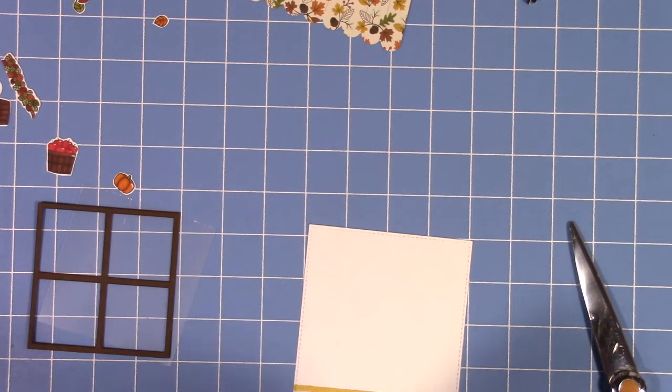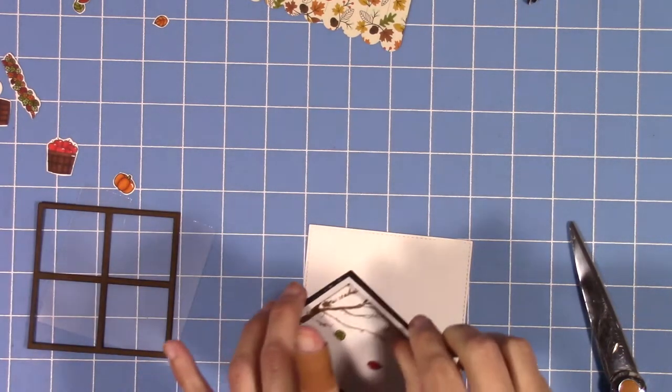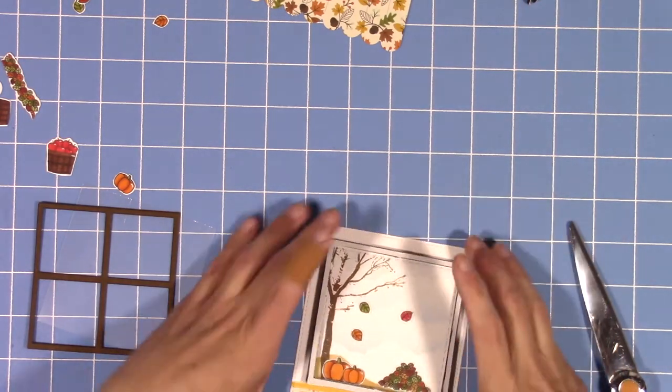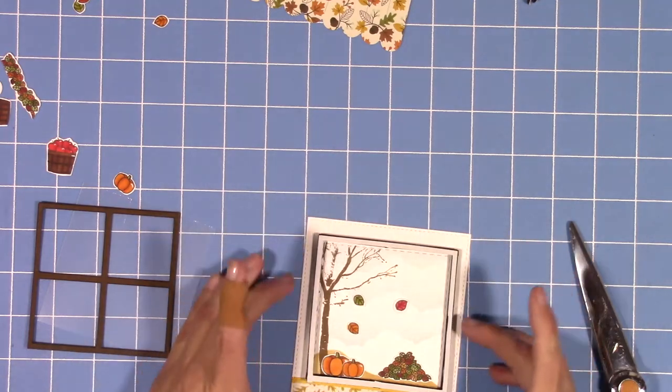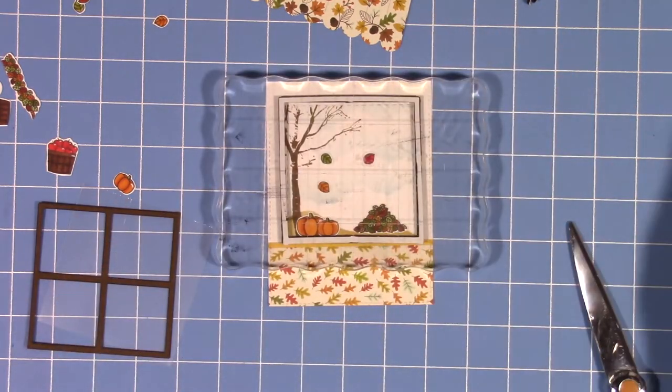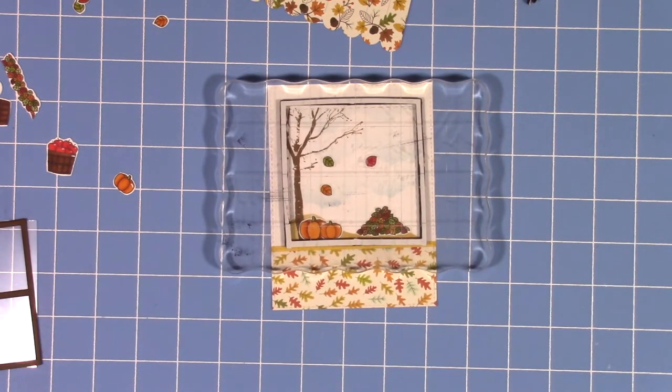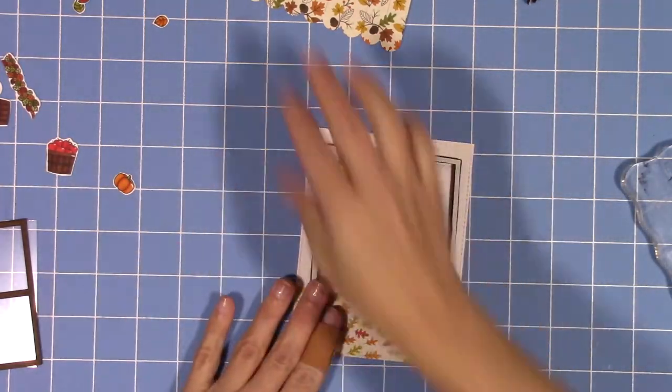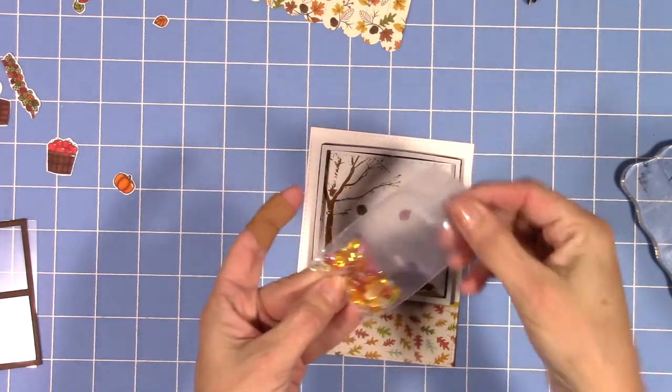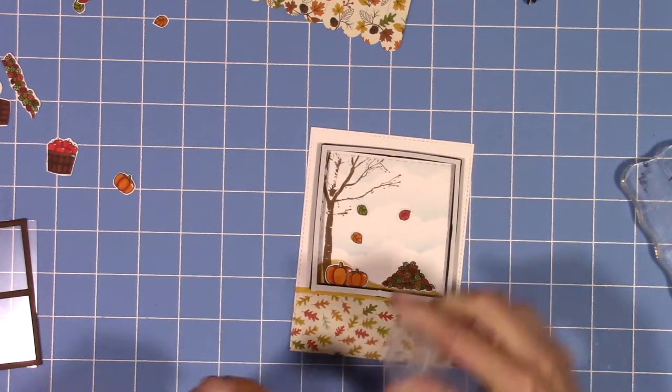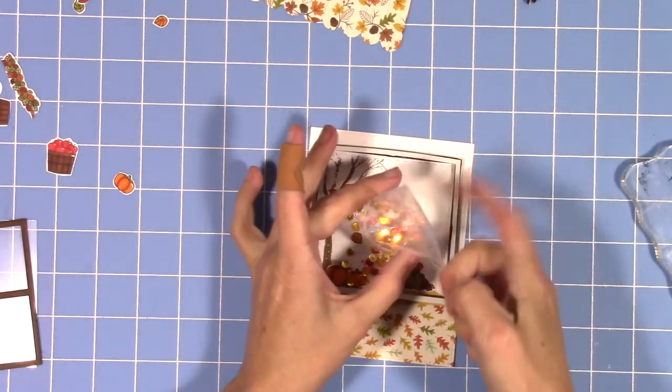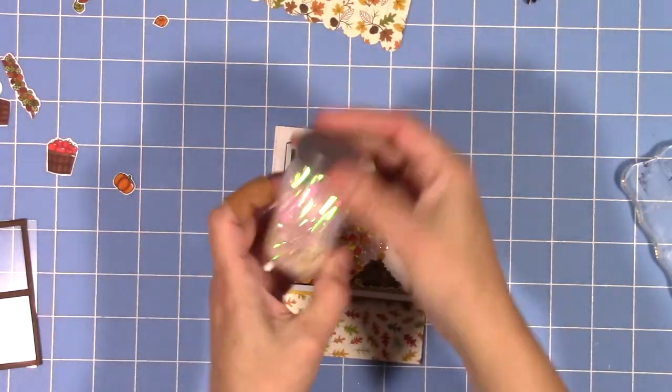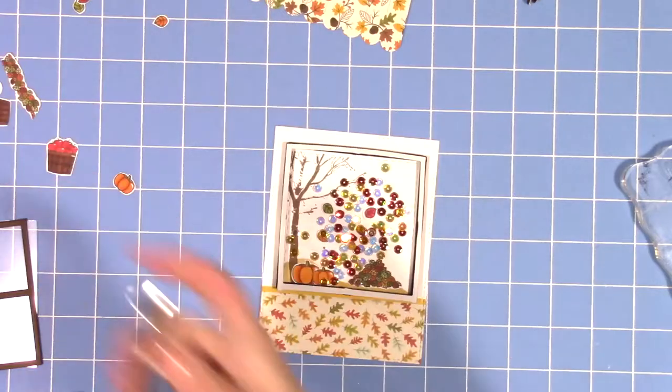Now I'm just going to place down my foam on top of my panel, the inside of my shaker window. I'm going to attach that down and let it sit there and dry for a minute. I attach them kind of backwards so that the tape side of the foam pieces is sticking up because that's what I'm going to attach the acetate to.